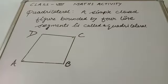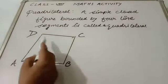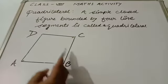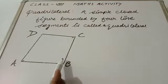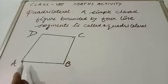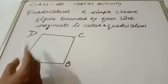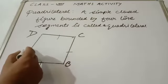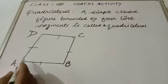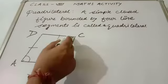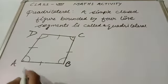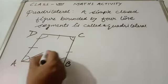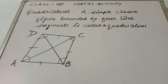Students, first of all, what is a quadrilateral? A simple closed figure bounded by four line segments is called a quadrilateral. A quadrilateral has four vertices A, B, C, and D; four sides AB, BC, CD, and DA; four angles: angle A, angle B, angle C, and angle D; and two diagonals. One diagonal is AC and the second diagonal is BD.